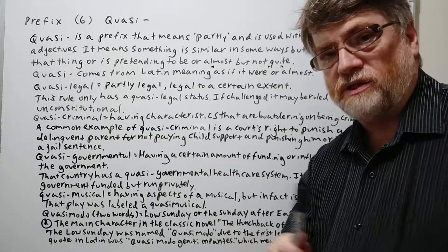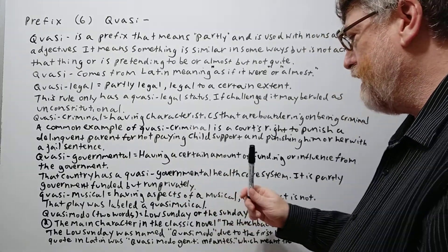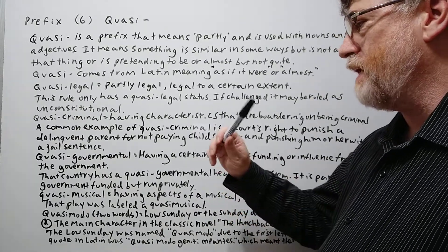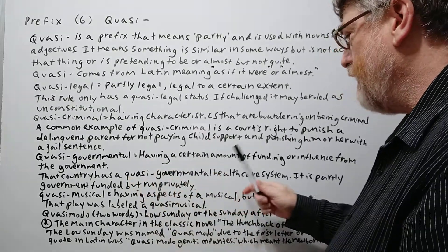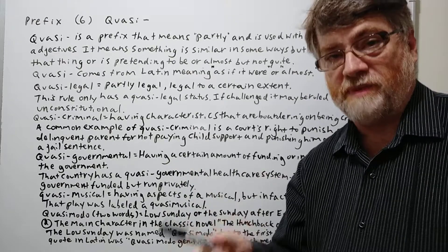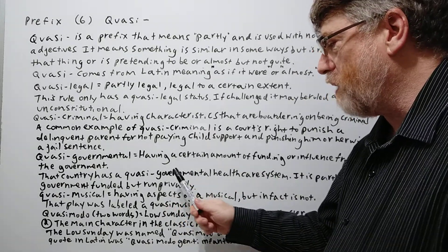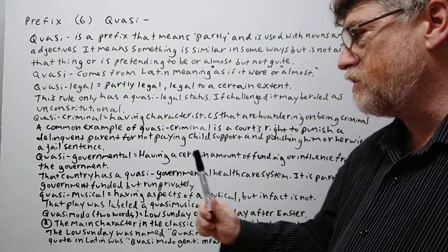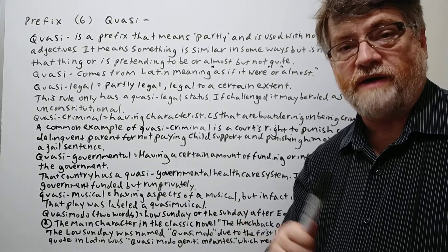Quasi governmental means partly or partially governmental — having a certain amount of funding and influence from the government. For example: 'That country has a quasi governmental health care system. It is partly government funded but run privately.'